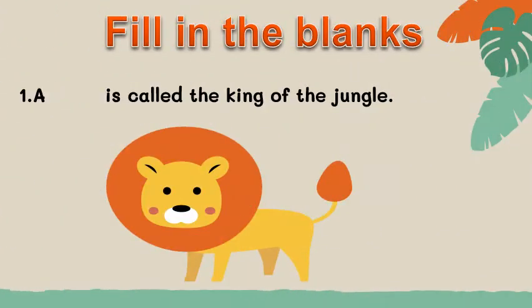Number one: A dash is called the king of the jungle. You can see the picture and guess who this is. Yes — a lion is called the king of the jungle.